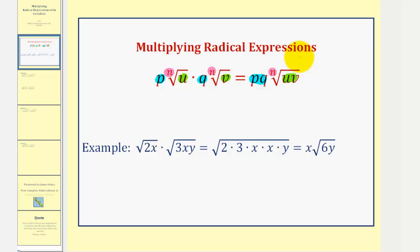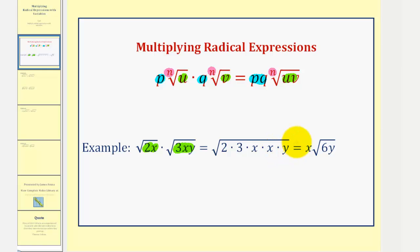As an example with variables, if we have the square root of 2x times the square root of 3xy, because they're both square roots the indexes are the same (both two). The terms outside the radicals are ones, so we just multiply the radicands: 2x times 3xy under the square root, giving us 2 × 3 × x × x × y. We can see a perfect square factor of x², so the square root of x² simplifies to x, leaving us with x times the square root of 6y.